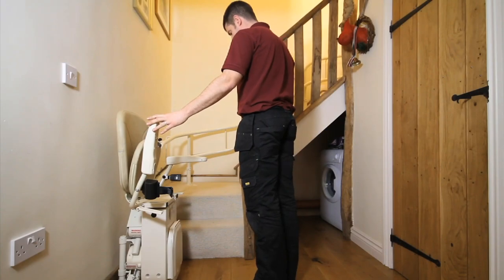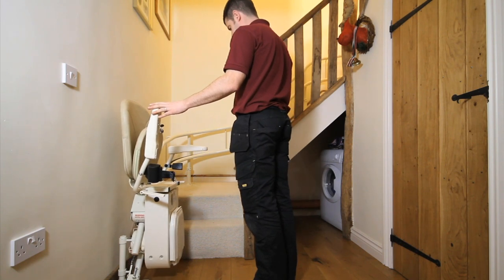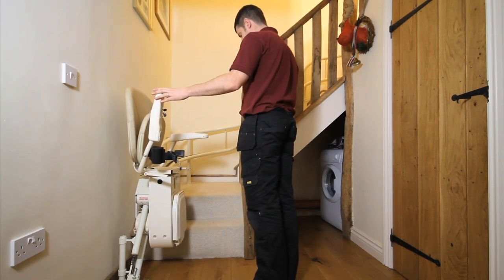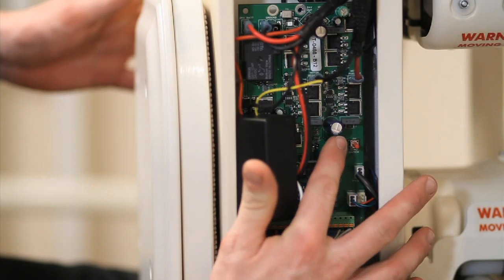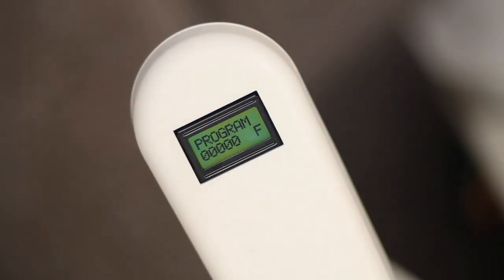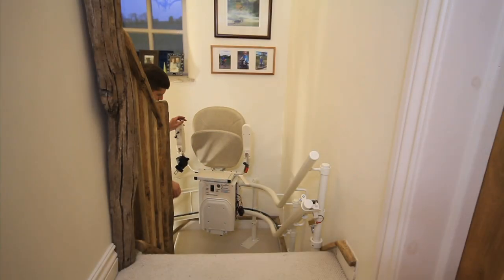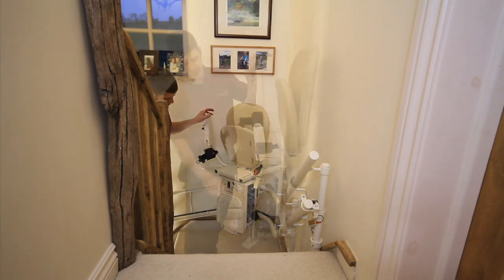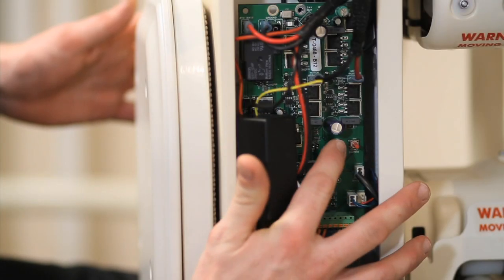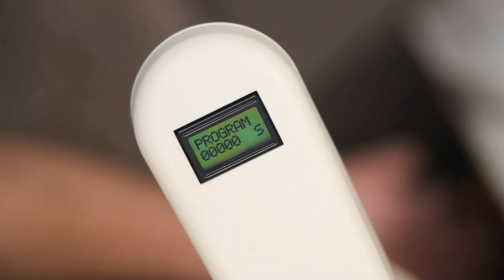Next, run the carriage approximately 200mm or 8 inches away from the end stop. Again on the PCB, press the red adjust button once. This is the button to the left of the two. Once pressed, the S on the display will change to F for fast speed. Now, run the carriage to the top of the rail, stopping again approximately 200mm or 8 inches from the end stop. Press the adjust button once again and the F will change back to an S, indicating slow speed once again.